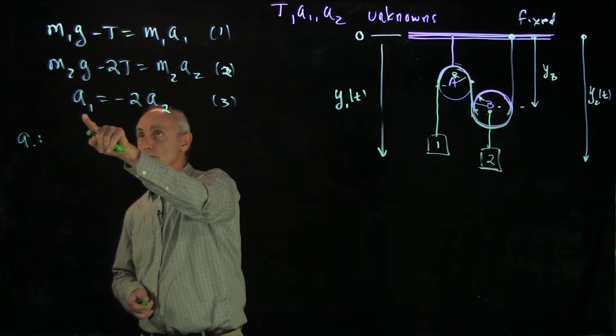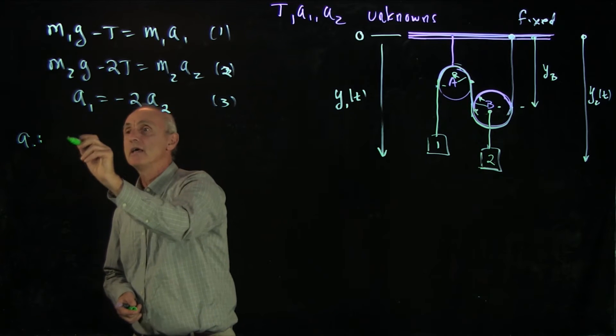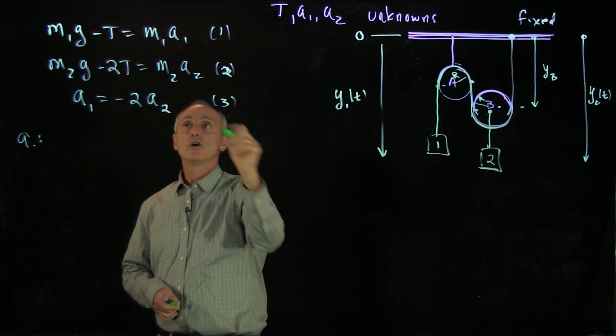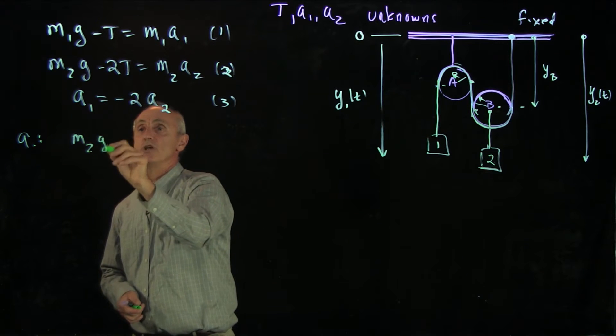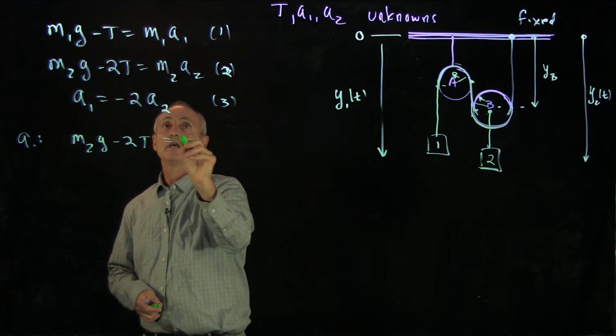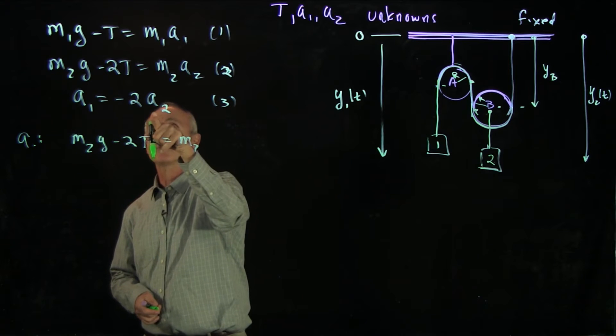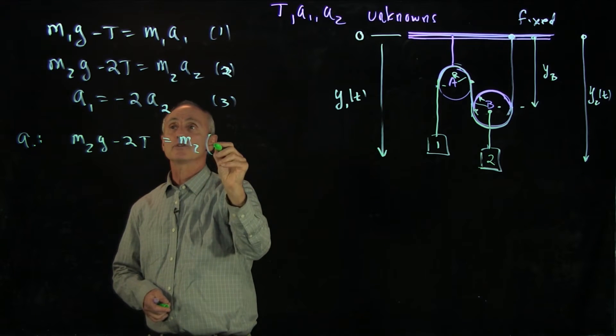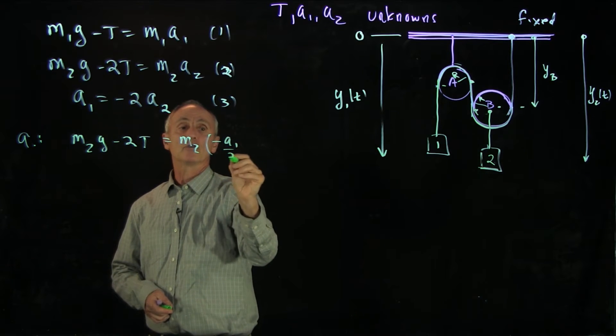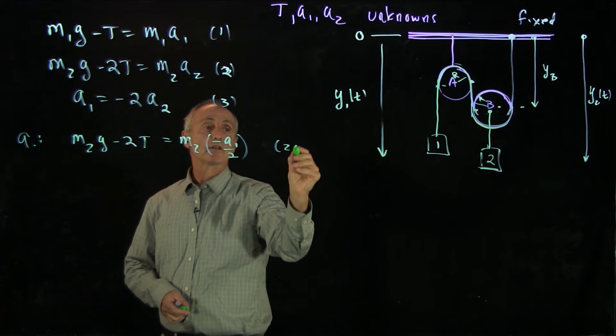So my first step is to rewrite equation 2 as m2g minus 2t equals m2. Now here, I'm going to make the substitution, which is minus a1 over 2. So we'll call that 2a.